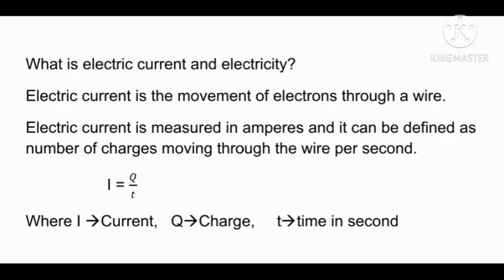What is electric current and electricity? Electric current is the movement of electrons through a wire. Electric current is measured in amperes and can be defined as number of charges moving through the wire per second. Its formula is I equal to Q upon T, where I is current, Q is charge, and T is time in seconds.